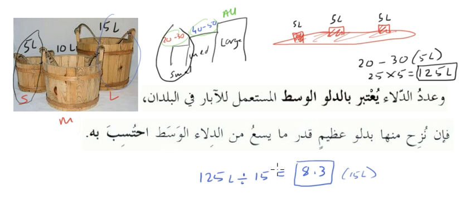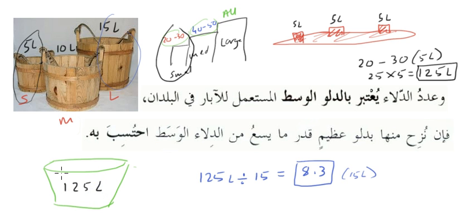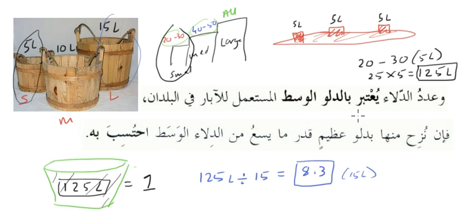This is what he's explaining — the number of buckets removed are in accordance with the average buckets used in the city. If everyone uses five-litre buckets normally but someone comes with a large fifty-litre bucket, you wouldn't need to remove twenty buckets of the large size — you'd use less.